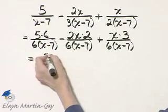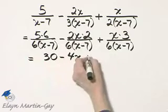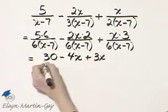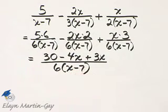So that's 5 times 6, or 30, minus 4x, plus 3x, all over 6 times x minus 7.